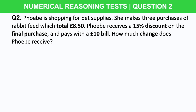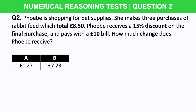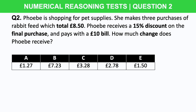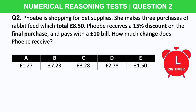Phoebe is shopping for pet supplies. She makes three purchases of rabbit feed which total £8.50. Phoebe receives a 15% discount on the final purchase and pays with a £10 bill. How much change does Phoebe receive? Is it a) £1.27, b) £7.23, c) £3.28, d) £2.78, or e) £1.50? I'm going to give you 20 seconds on the timer to work this out starting now.